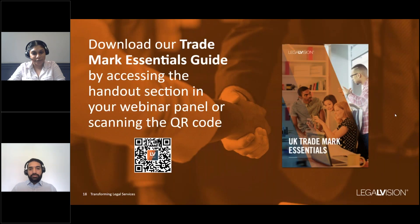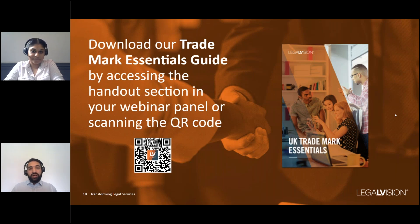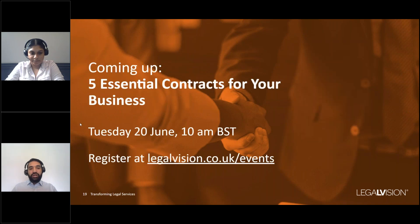That brings us to the end of the main part of the webinar. You might find our publication on trademark essentials useful — you can find it in the handout section of the webinar panel or scan the QR code on screen. We also have an upcoming event on Tuesday 25 June at 10am, where we'll be talking about five essential contracts for your business. You can register via the link shown on screen, which can also be found in the resources section of the LegalVision website.